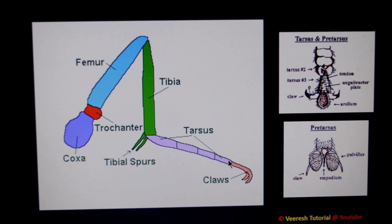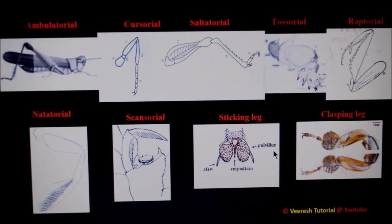In some textbooks, pretarsus is also considered one of the leg segments. The tarsus terminates in a pair of claws. In between the claws, a pad-like structure called the aroleum is present. But in houseflies, the aroleum is absent; instead, a median spine-like structure called the empodium is present between the claws. At the base of the claw, a pad-like structure called the pulvillus is present.